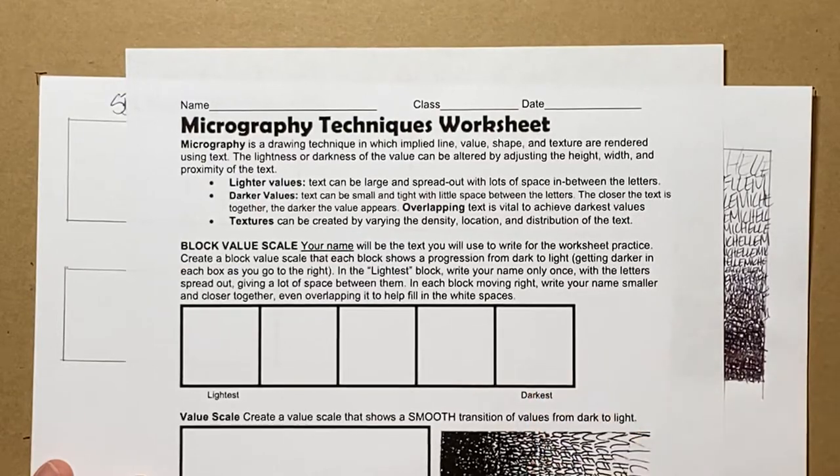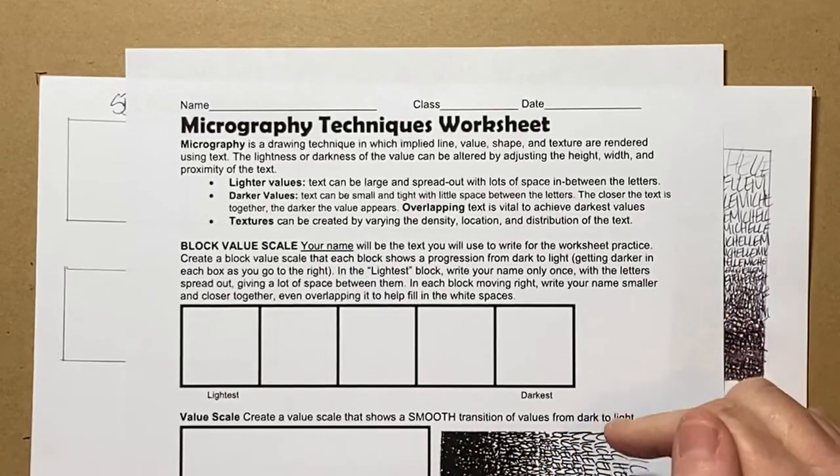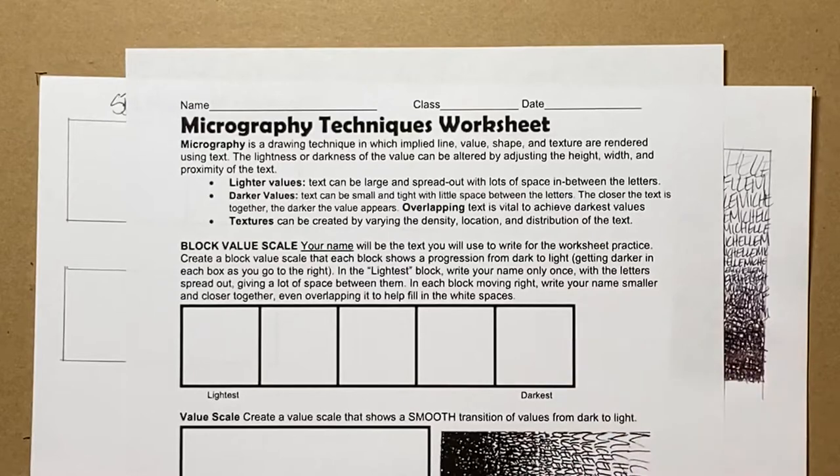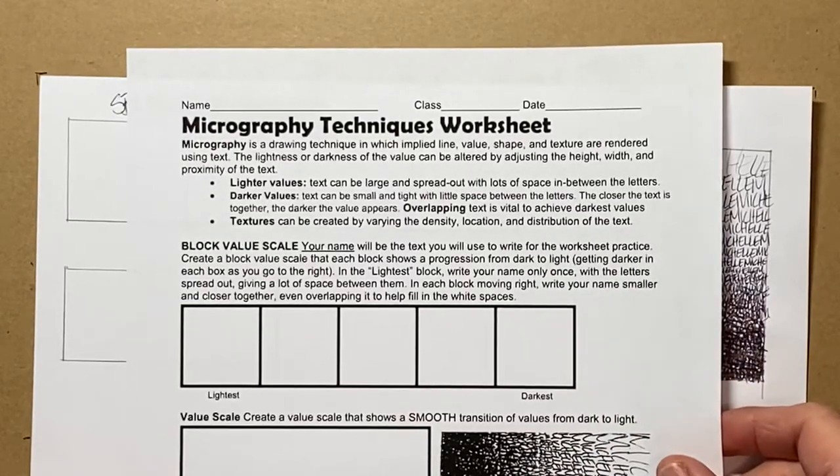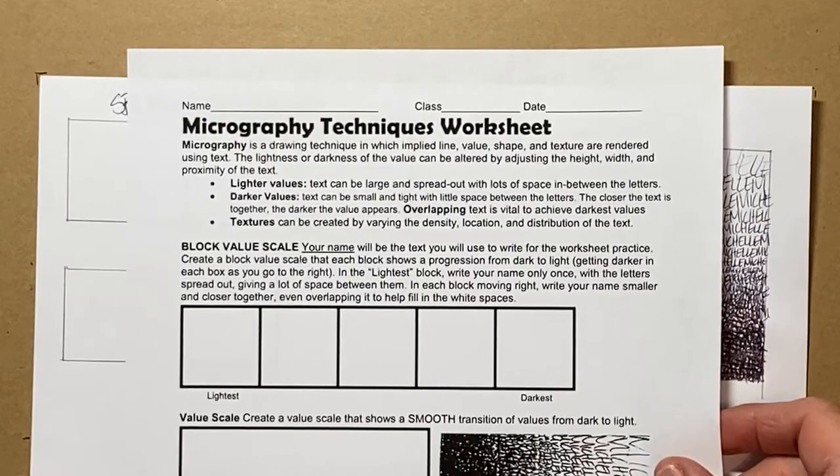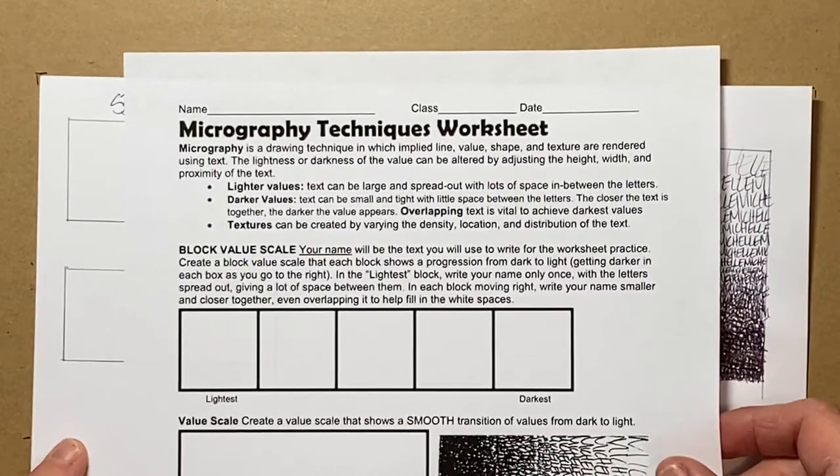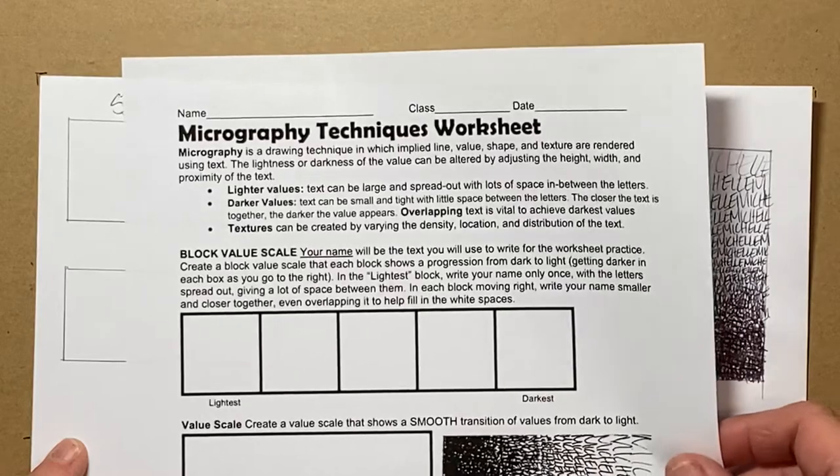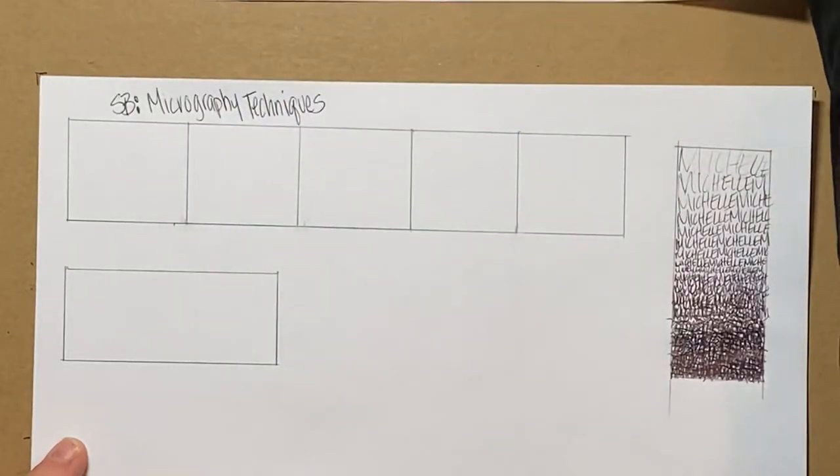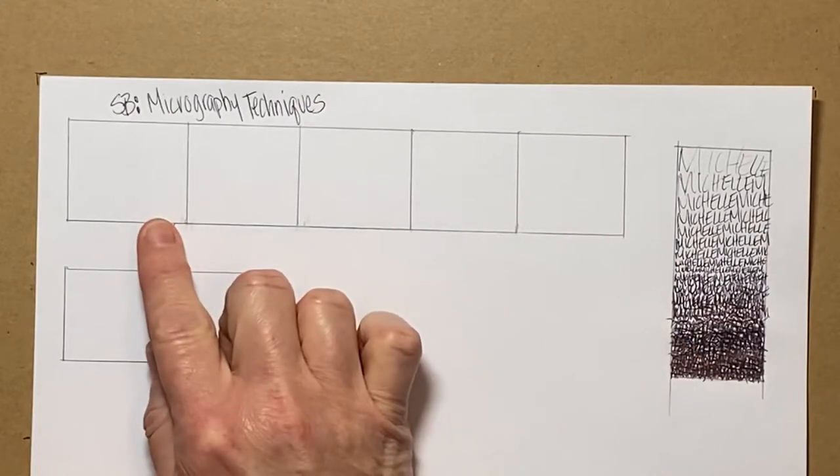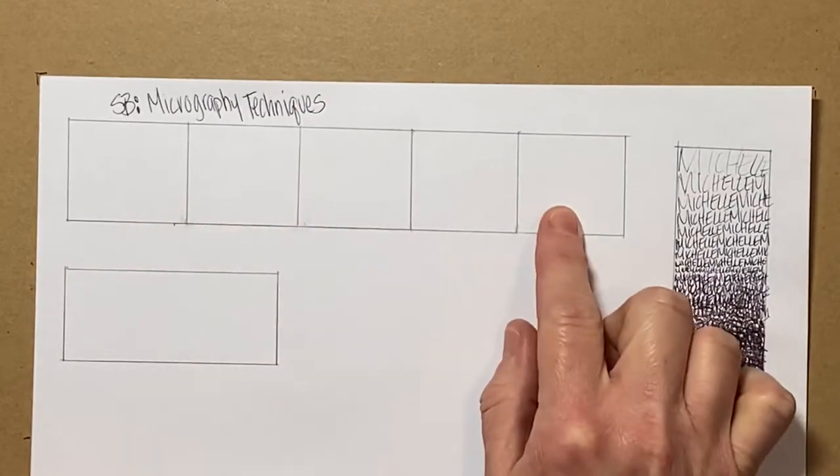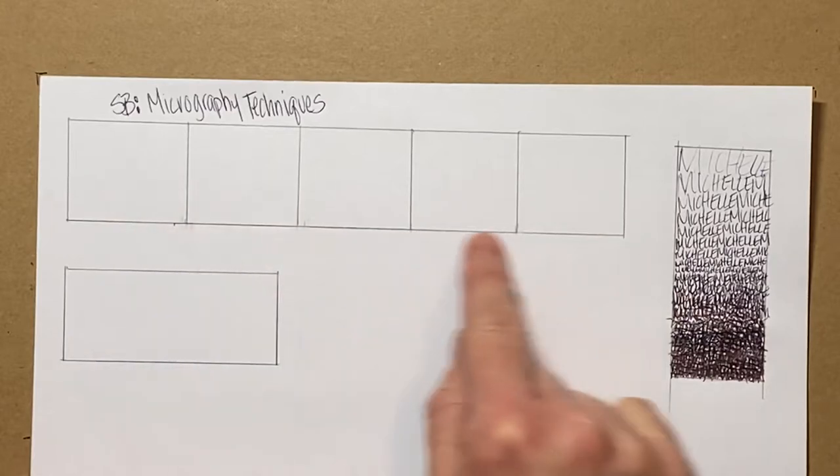Then we'll do a value scale that shows a smooth transition. The first thing that I want you to do is, obviously you don't have this worksheet in front of you right now, so I want you to open up to a clean page in your sketchbook, and I would like you to draw in a block value scale just using some type of straight edge or you can freehand it.